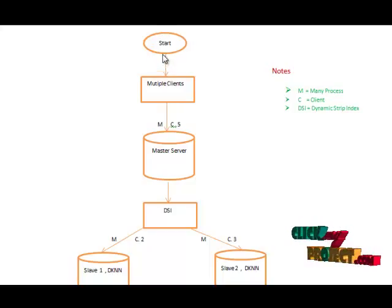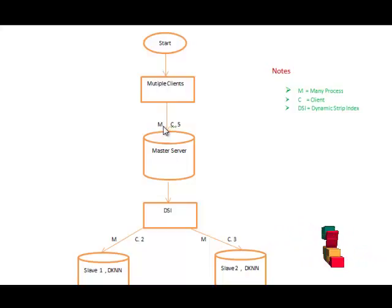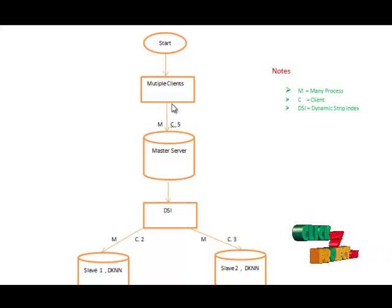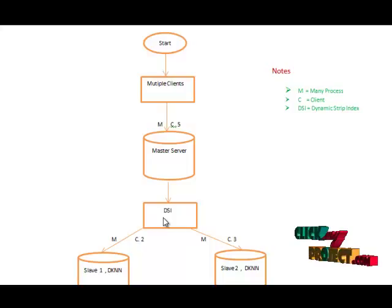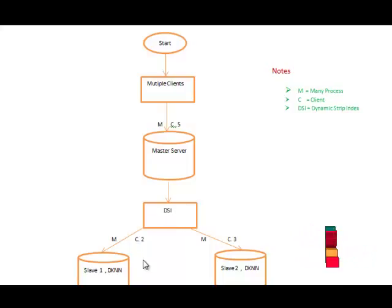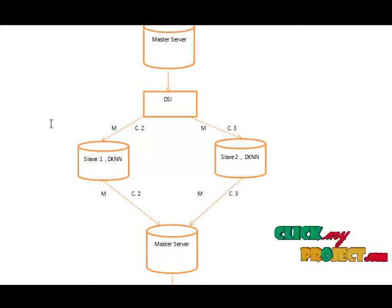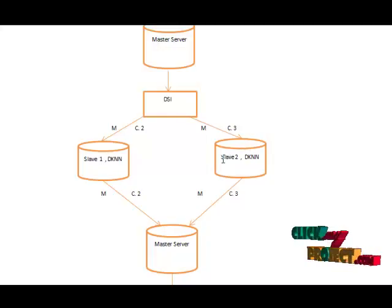First, start the process. Enter multiple clients — this system has 5 clients, where M means many and C means client. So 5 clients send requests to the master server at a time. The master server receives the client requests and calls DSI (Dynamic Strip Indexes). The Dynamic Strip Indexes then calls Slave 1 server and Slave 2 server. Slave 1 server handles the minimum clients and Slave 2 server handles the maximum clients, compared with Slave 1.